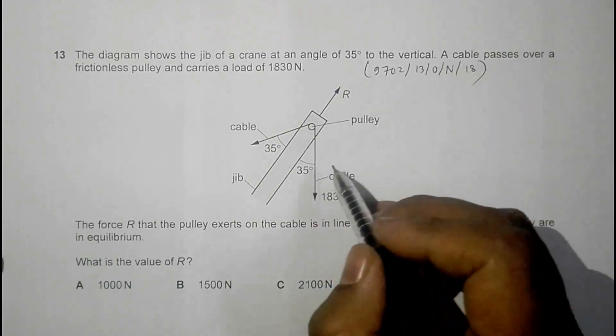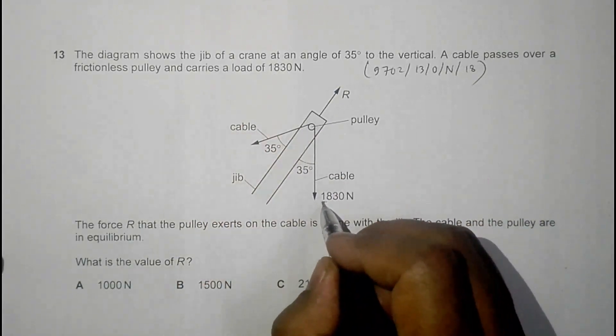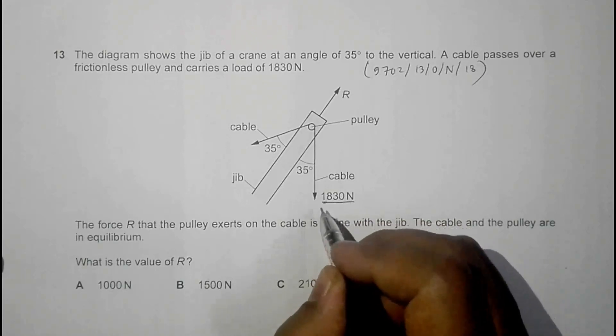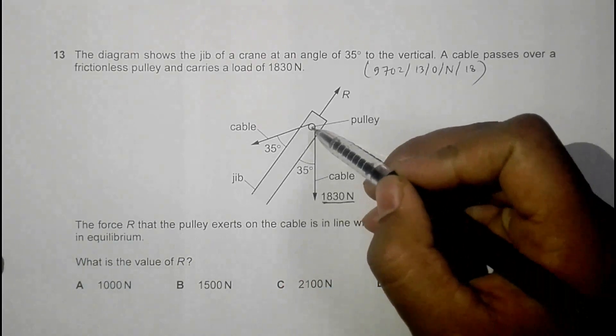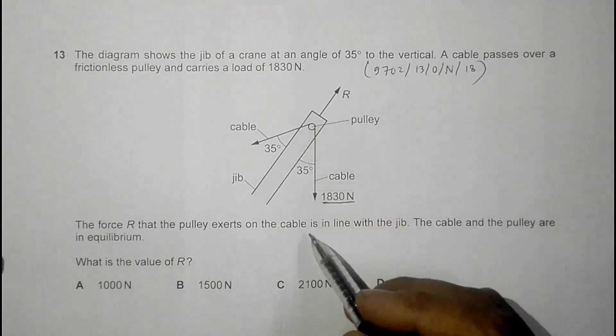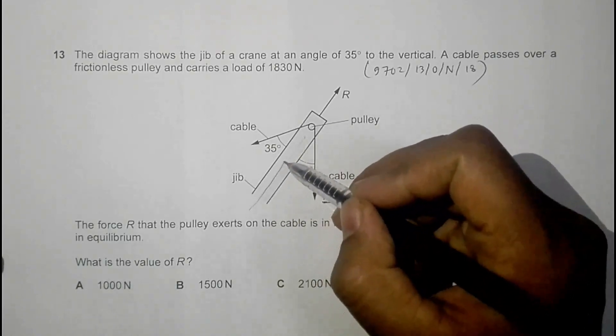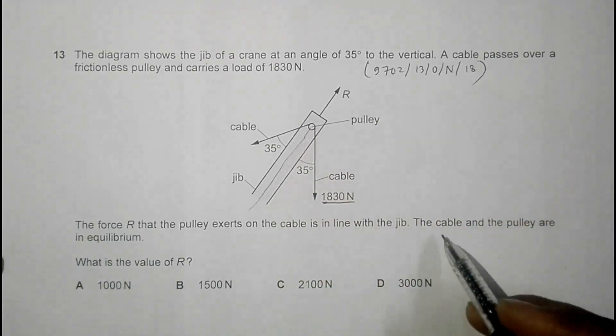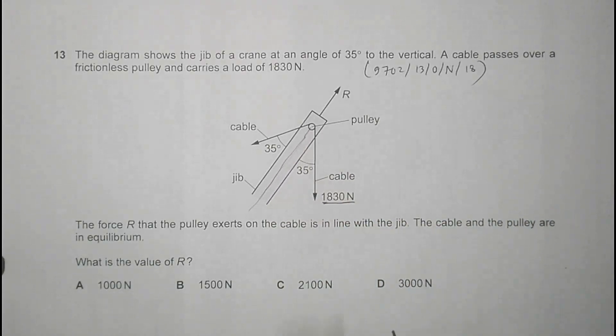A cable passes over a frictionless pulley and carries a load of 1830 Newton. The force R that the pulley exerts on the cable is in line with the jib. The cable and the pulley are in equilibrium, so the whole system is at rest, neither performing linear nor rotational acceleration. What's the value of R?